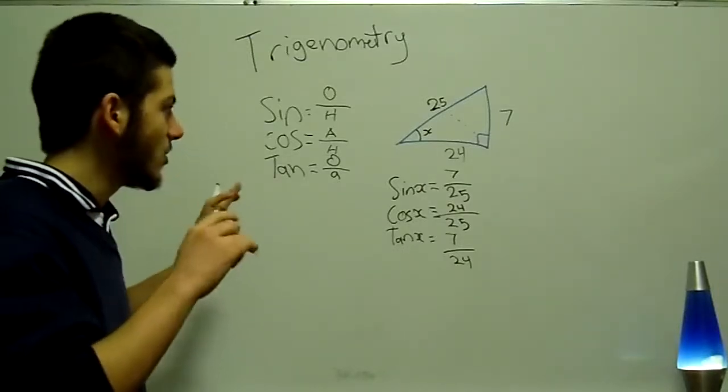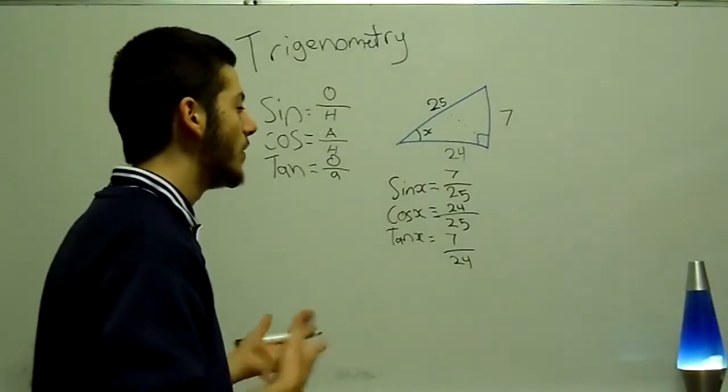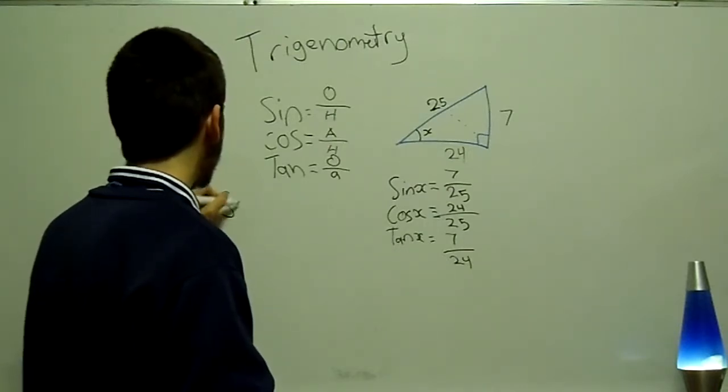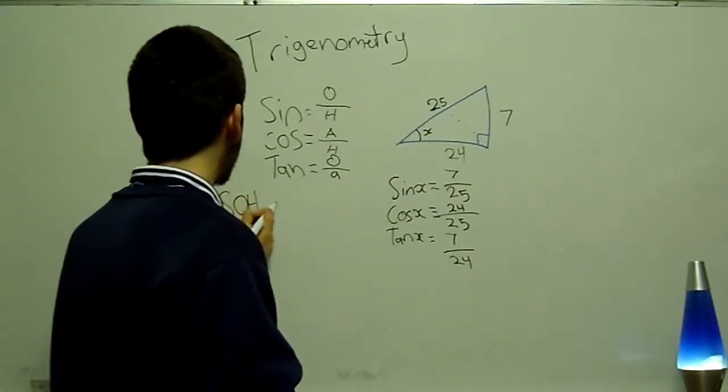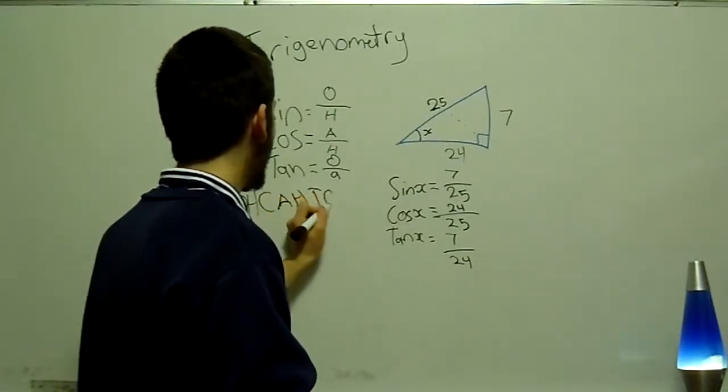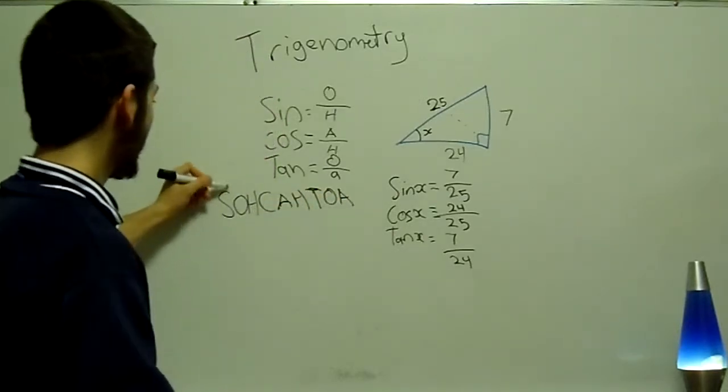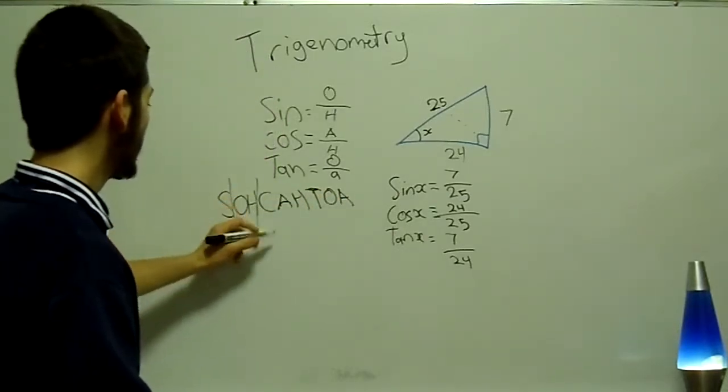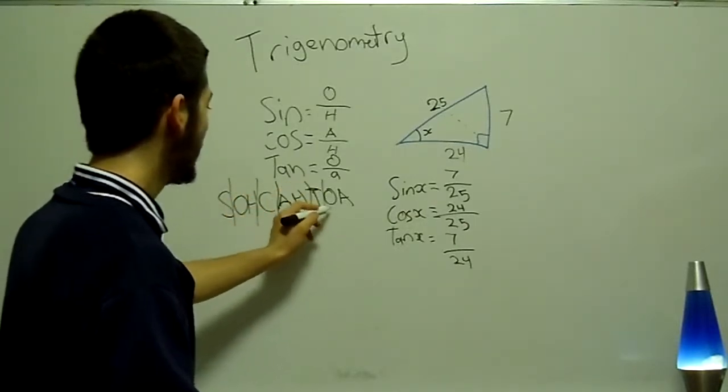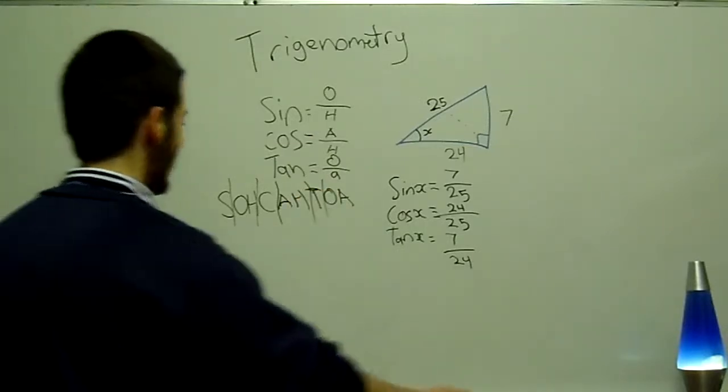You have to get this into your brain. If you can't remember this easily, one mnemonic that people usually use to remember it is SOHCAHTOA. So sine, opposite over hypotenuse, CAH, cos, adjacent over hypotenuse, and TOA, tan, opposite over adjacent. SOHCAHTOA. That's what they usually use.